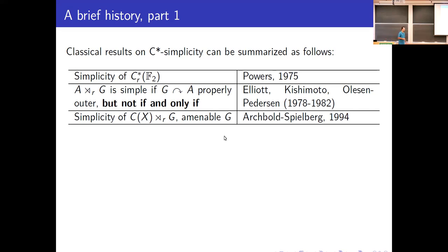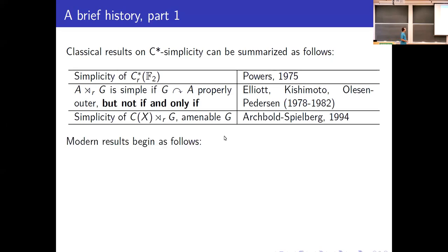The important thing to notice is that this is very much not an if-and-only-if, because in the example of the free group on two generators, its action on the complex numbers is not properly outer, but the reduced group C*-algebra is still simple. Proper outerness will still play a role in all future results. For commutative cross products, at least for amenable groups, Archibald and Spielberg in the 90s showed that proper outerness is equivalent to simplicity of the cross product, and in this context proper outerness is the same as topological freeness.